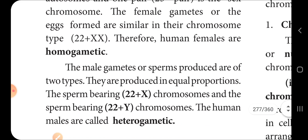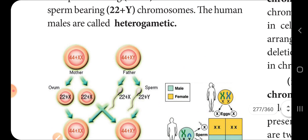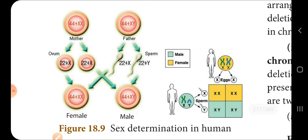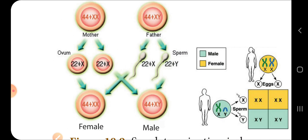Human females are homo-gametic. The male gametes are two types of sperm present in equal proportions: sperm bearing 22 autosomes plus X chromosome, and sperm bearing 22 autosomes plus Y chromosome. So the male gametes are heterogametic, while the female gametes are homo-gametic.